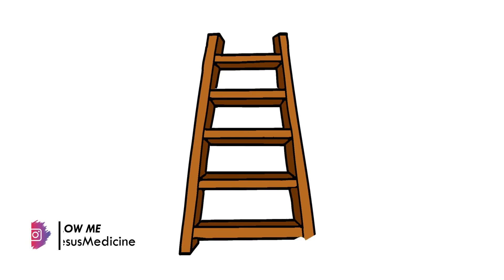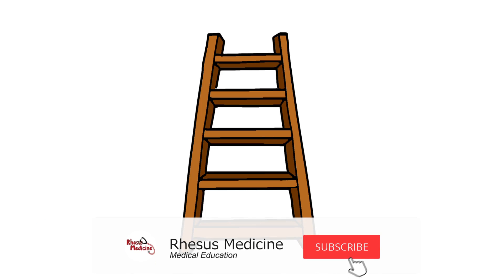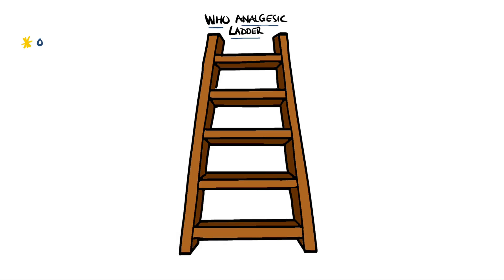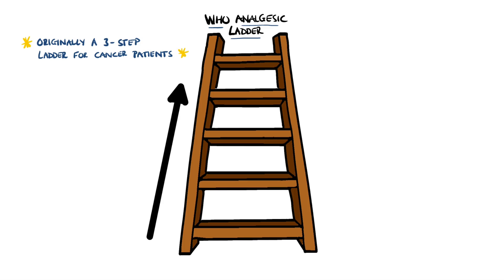Pain medication and management are a fundamental part of patient care. I'm going to use the World Health Organization Ladder of Analgesia as a structure for this video. The original ladder was designed for cancer patients and involved three steps, and was applicable to non-cancer, acute and chronic pain. Recently, suggestions were made to modify it and a four-step ladder was introduced. The idea is to start at the bottom of the ladder and work your way up based on the patient's pain intensity.